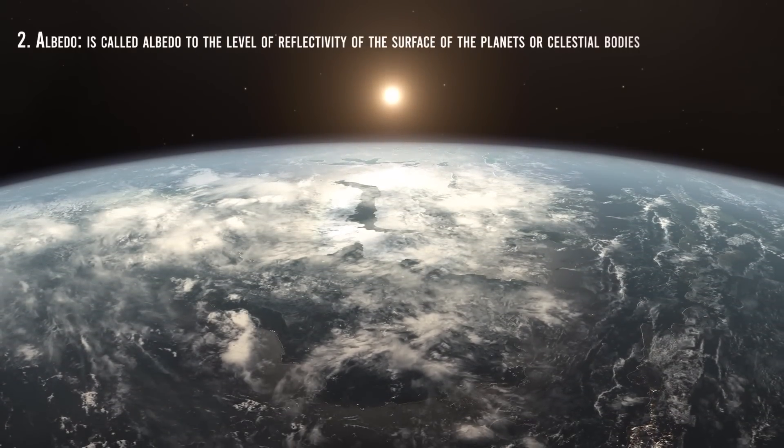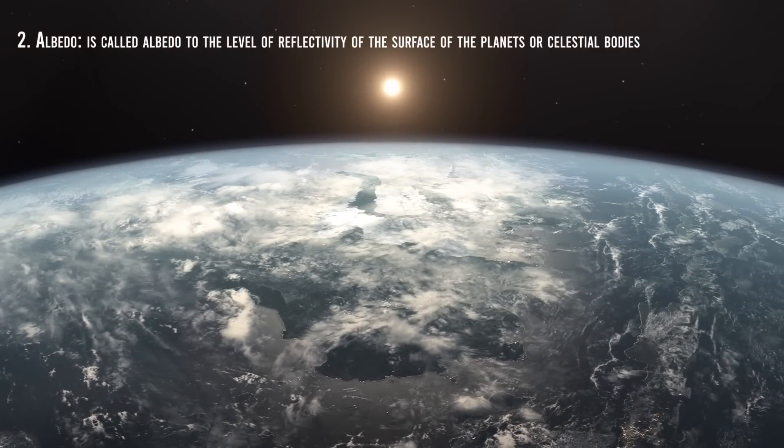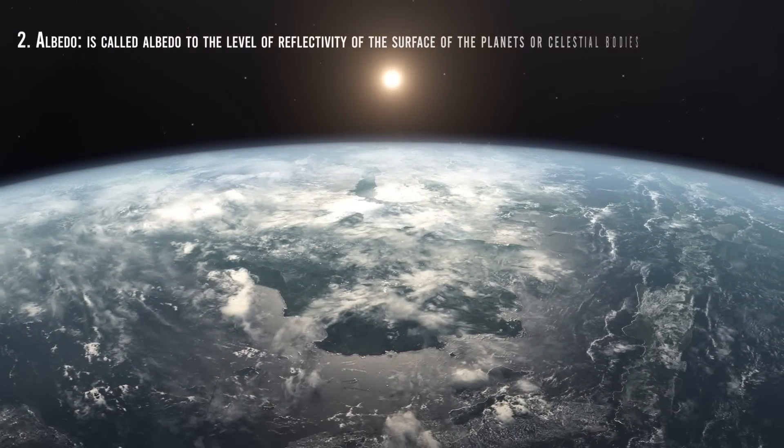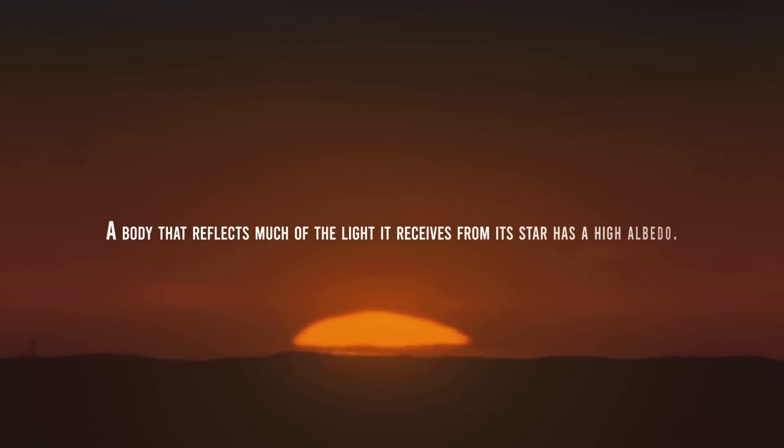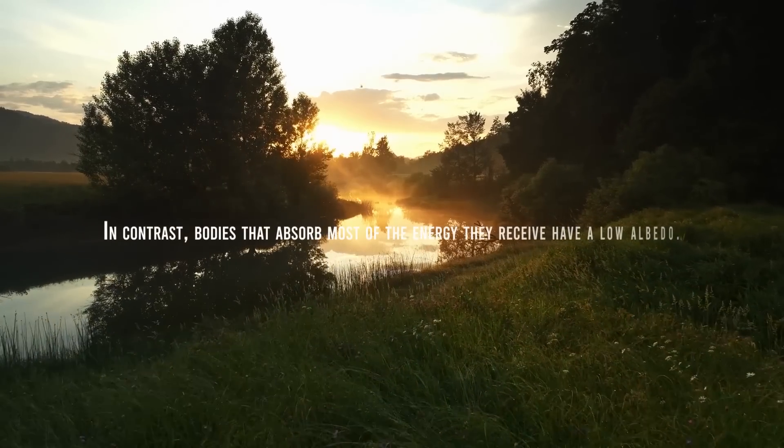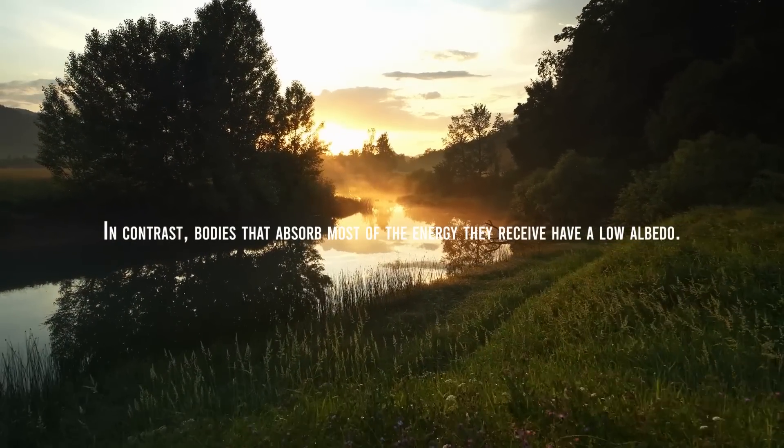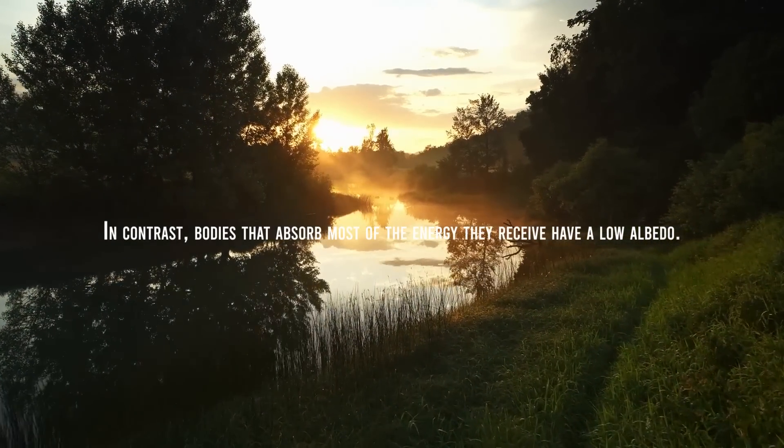Albedo. It's the level of reflectivity of the surface of the planet or celestial bodies. A body that reflects too much of the light it receives from its star has a high albedo. In contrast, bodies that absorb most of the energy they receive have a low albedo.